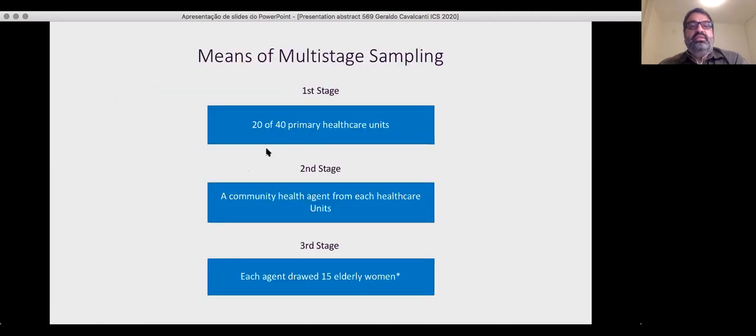In the first stage, 20 public health care units were randomly selected. In the second stage, one community health agent was drawn from each primary unit.